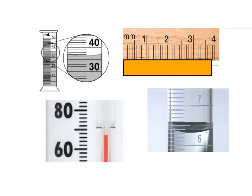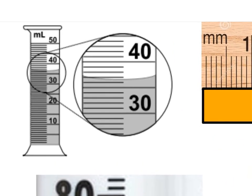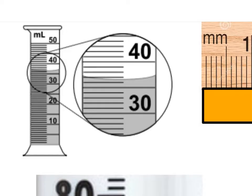Let's look at this practice graduated cylinder. Each line here represents one milliliter — if this is 30 and this is 40 with nine lines between, each line is one milliliter. The liquid is between 36 and 37, and it's closer to the 37 line — over halfway — so I estimate it at 36.7 milliliters.